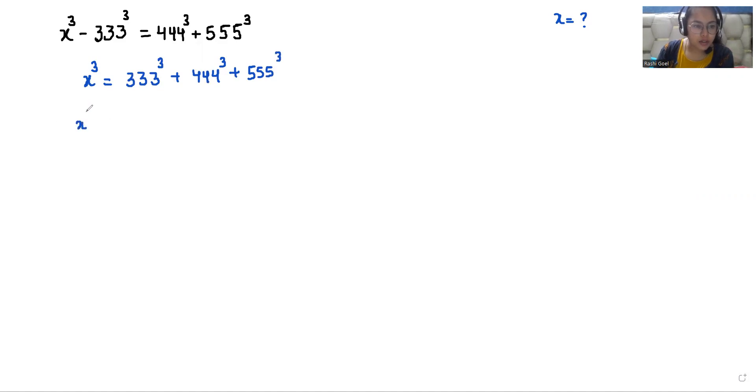Now 333 I can write it as 3 times 111 whole cube. Similarly 444 as 4 times 111 cube plus 5 times 111 cube. Now I can write it as 3 cube times 111 cube plus 4 cube times 111 cube plus 5 cube times 111 cube.